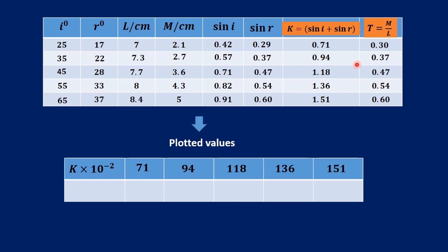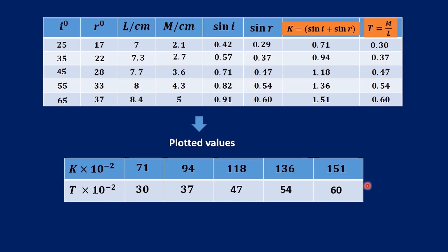For the values of t, we move the point twice — 1, 2 — and we have 30 times 10 exponent negative 2. The next values will be 37, 47, 54, and 60, all times 10 exponent negative 2. So the values are now in standard form and can be easily plotted on the graph.